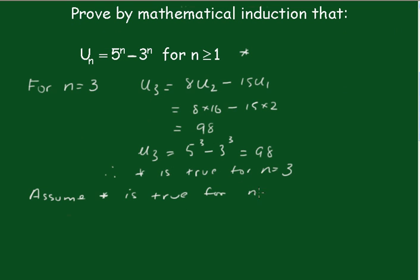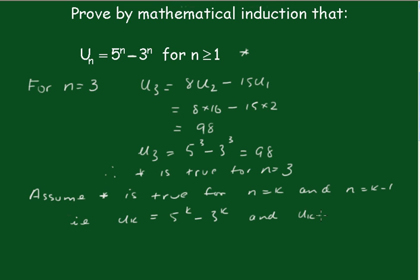Assume the statement is true for n equals k and n equals k minus 1. That is, Uk equals 5 to the k minus 3 to the k, and U(k-1) equals 5 to the k minus 1 minus 3 to the k minus 1.